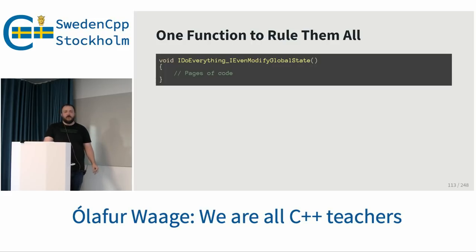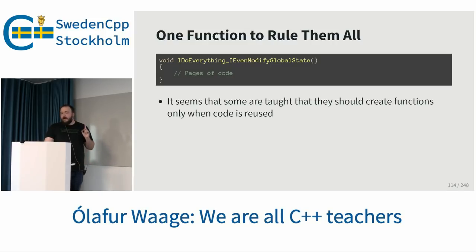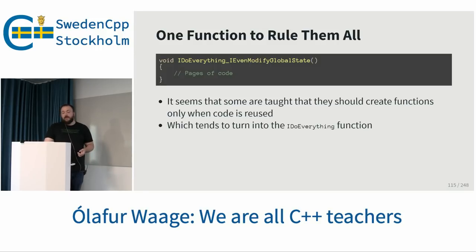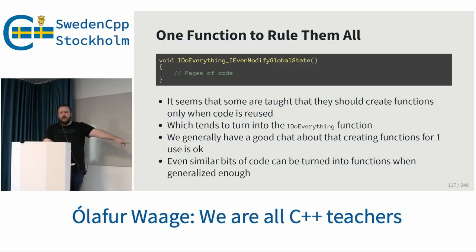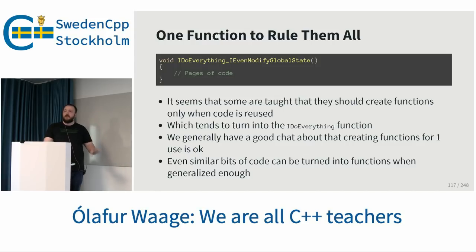This is in no particular order — if you're new, here are the things new programmers are usually doing wrong. The one function to rule them all: I do everything, I even modify global state, then you have pages of code. This seems to happen when people are taught that they should only create a function when code is reused. There's no need to do a function if I'm not reusing it — which tends to turn into the 'I do everything' function. We generally have a chat: creating a function for one use is okay because you're documenting it, isolating code. Similar bits of code can turn into functions when generalized.